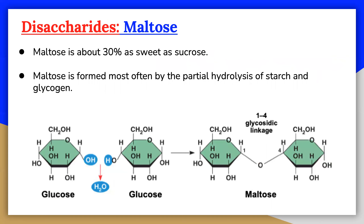Maltose as a disaccharide occurs to a limited extent in sprouting grains. It is formed most often by the partial hydrolysis of starch and glycogen. Maltose is about 30 percent as sweet as sucrose. The human body is unable to metabolize maltose or any other disaccharide directly from the diet because the molecules are too large to pass through the cell membranes of the intestinal wall.